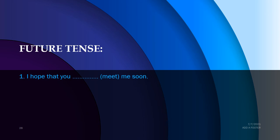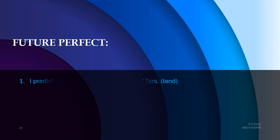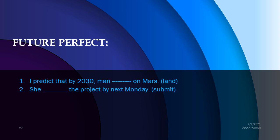Future tense exercises: 'I hope that you will meet me soon.' 'When I will be 60 years old, I will open a club.' 'The plane will take off in a few minutes.' Future perfect tense: 'I predict that by 2020 man will have landed on Mars.' 'She will have submitted the project by next Monday.' 'He will have finished the work within two hours.'